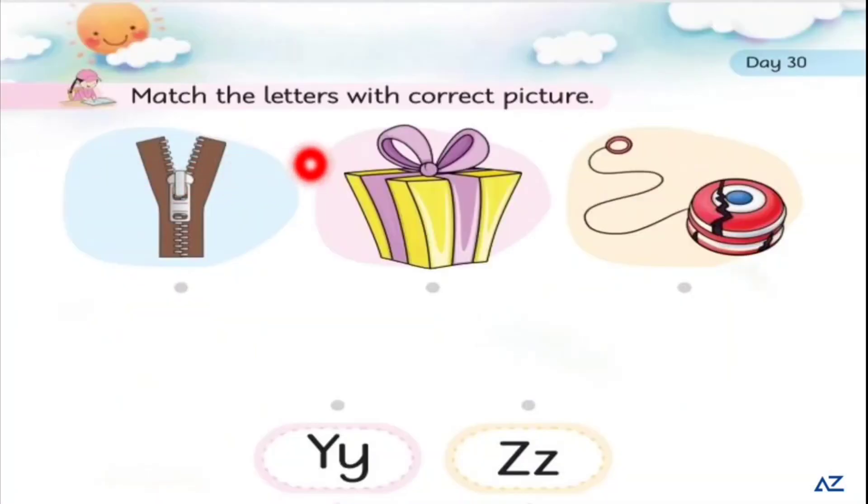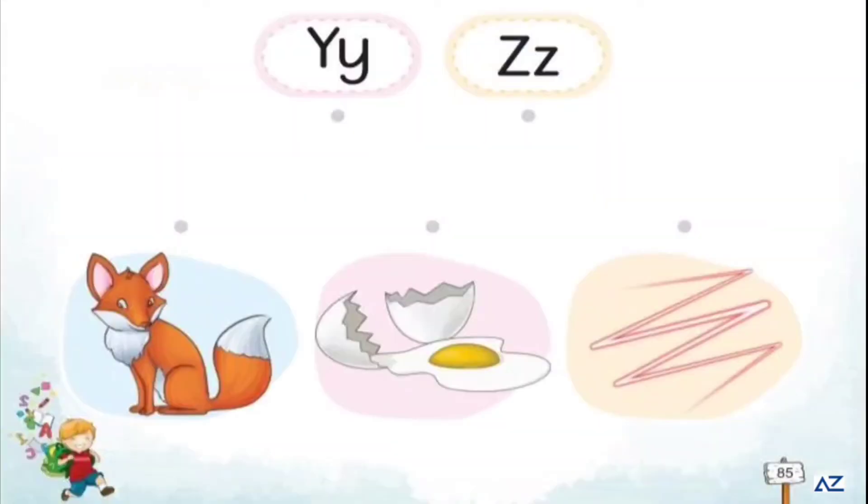The next question is match the letters with correct picture. Y - yo-yo, and Z - zip. Z - zip, we have yo-yo.